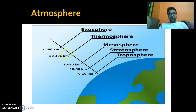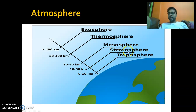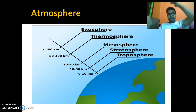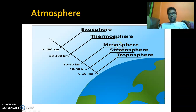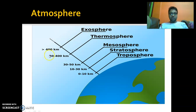These are the various layers of the atmosphere. From 0 to 10 kilometers on the surface you have the troposphere. From 10 kilometers to 30 kilometers the layer is known as stratosphere. If you go higher, between 30 and 50 kilometers, it is known as the mesosphere. Higher than that is the thermosphere, and beyond that is the exosphere.